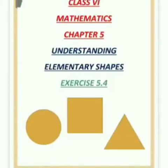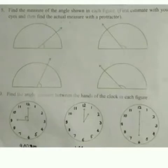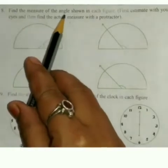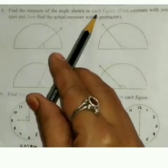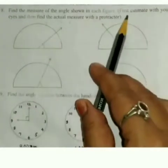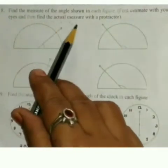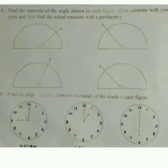Good morning students. How are you? Hope you all are fine. So let's start question number 8 and 9 of exercise 5.4. See question number 8: Find the measure of the angle shown in each figure. First estimate with your eyes and then find the actual measure with the protractor.